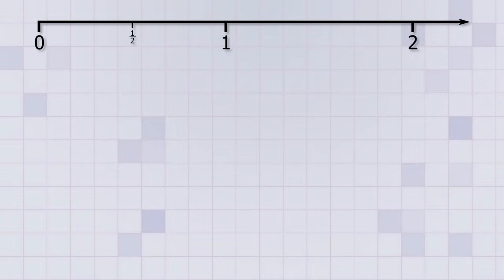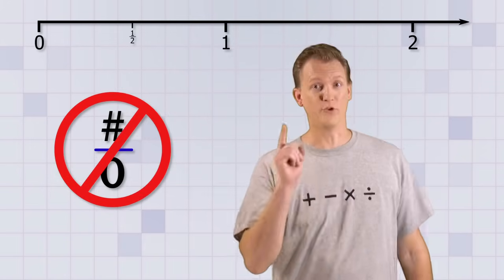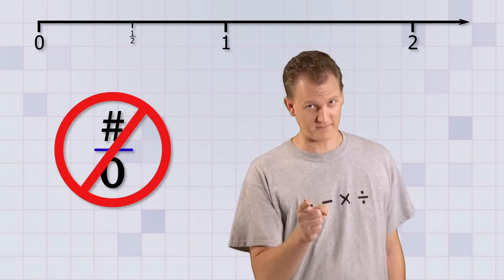And by the way, you can never have 0 as the bottom number of a fraction because you can't divide something into 0 parts, so don't even try it.